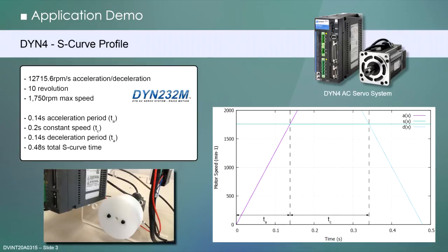On the DYN4 system, we will command a standard S-curve with defined acceleration, deceleration and max speed. The travel distance will be 10 revolutions and we are using the servo drive's built-in RS-232M motion profile commands.